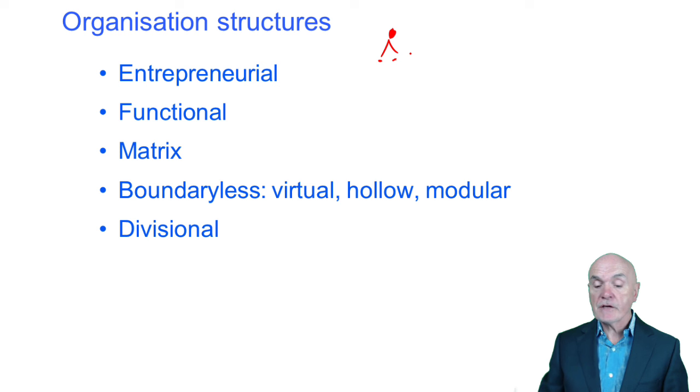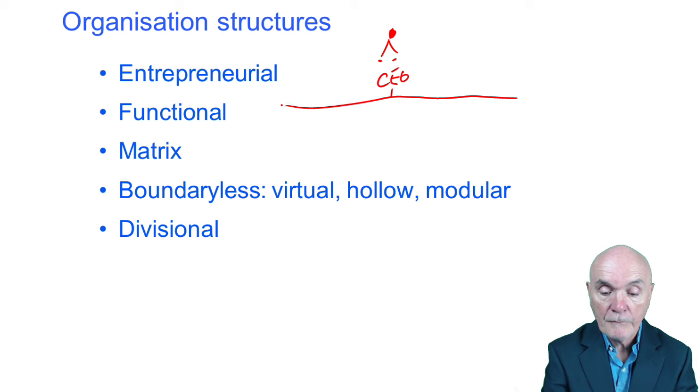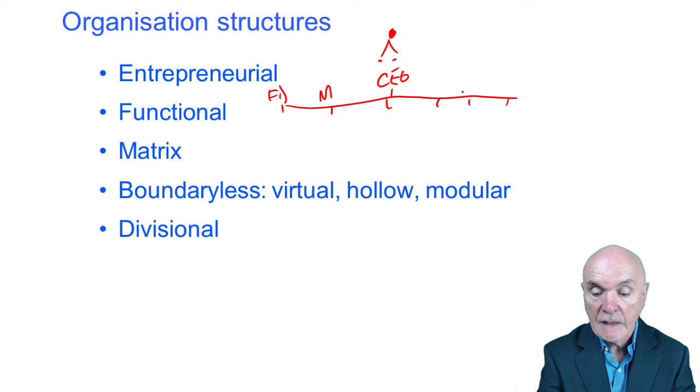Functional structure is very, very common. Typically what you have in a functional structure is you have the CEO. Let's put the CEO here, the chief executive officer here. And then you have the board. So here we have maybe the finance director. Here we maybe have the manufacturing person. Here we have maybe sales and marketing. Here we have maybe IT. There may be some other ones in there as well.